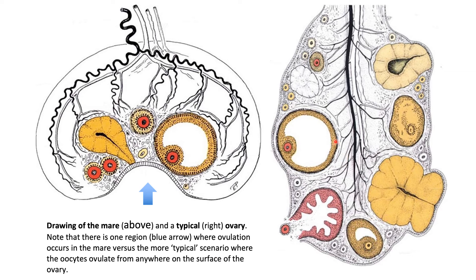There is only one region where ovulation takes place in the mare, known as the ovulation fossa, versus the more typical scenario where oocytes ovulate from anywhere on the surface of the ovary. In this particular diagram, ovulation can take place at various points on the typical ovary as follicles mature, as opposed to the mare, where the cortex is located on the inside and ovulation occurs only at the ovulation fossa. The surface of the mare's ovary is smooth because the structures are located on the inside.